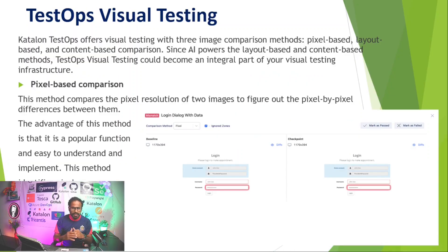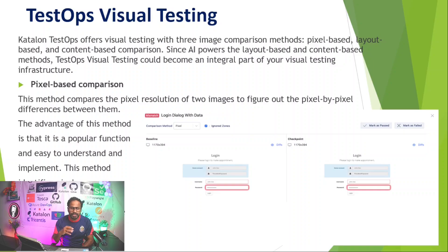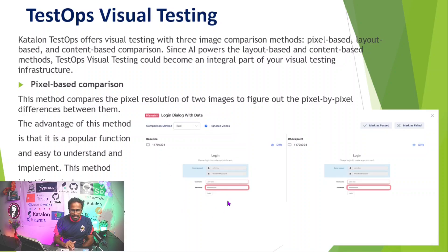Katalon TestOps offers visual testing with three image comparison methods: pixel-based, layout-based, and content-based. Since AI powers the layout-based and content-based methods, TestOps visual testing can become an integral part of your visual testing infrastructure. The first is pixel-based comparison, which compares the pixel resolution of two images to find pixel-by-pixel differences. On the left is your baseline image and on the right is your checkpoint image captured during test execution.